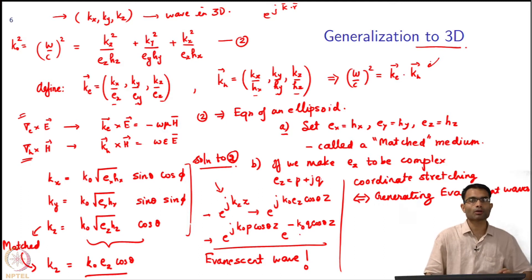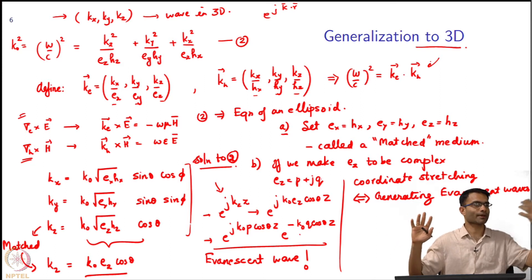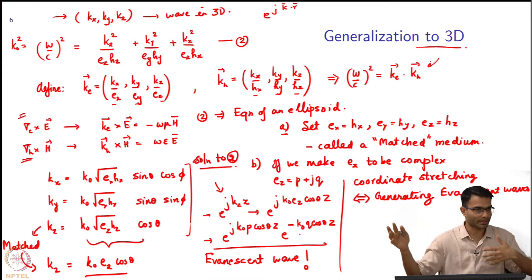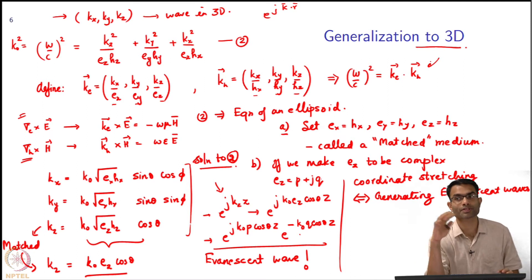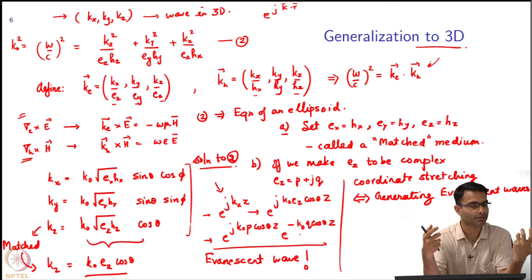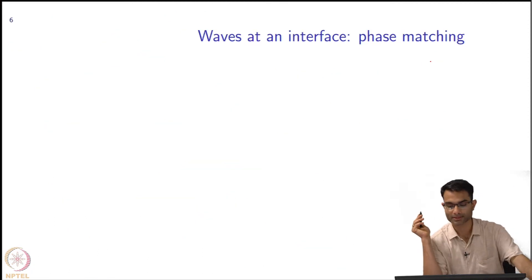So far we spoke about just a simple one medium with some values of Ex, Ey, Ez, Hx, Hy, Hz. But what was our original motivation? We wanted to put in an absorbing layer in our computational domain such that the waves did not get reflected back. For that we have to consider the interface between two media.